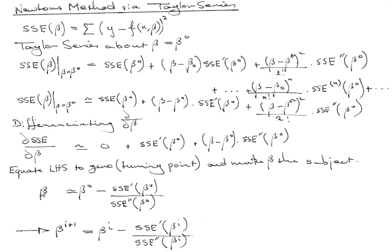We end up with Taylor series expansion beta equals, or approximately equals, beta 0 minus the value of the first derivative at beta 0, divided by the value of the second derivative at beta 0.